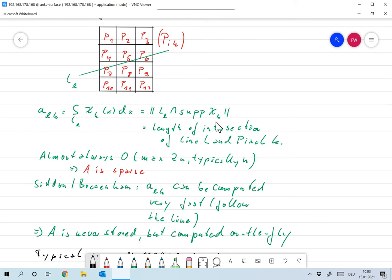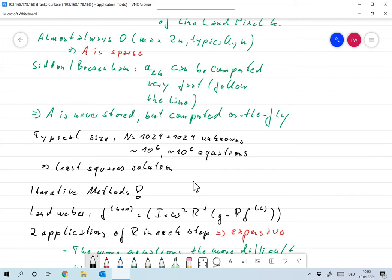So what would be the typical size? Typically a computer tomograph has a size of roughly 1024 by 1024. That's a typical size, so that's around 10 to the 6 unknowns, and also we have something like several times 10 to the 6 equations. So the matrix size is something like 10 to the 6 by 10 to the 6.